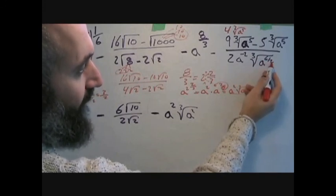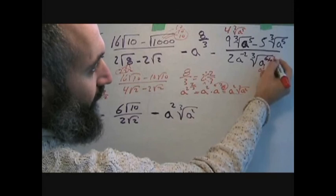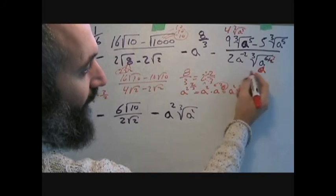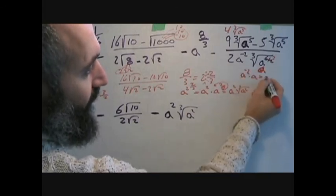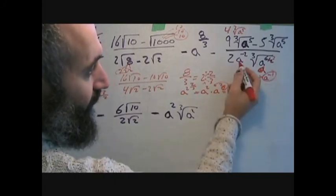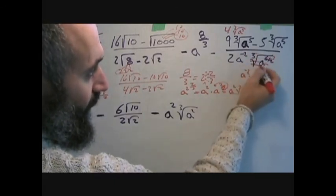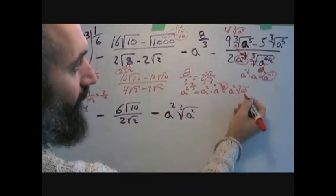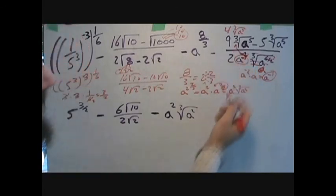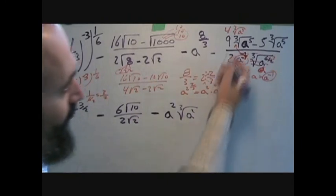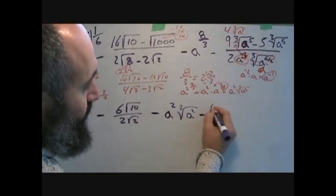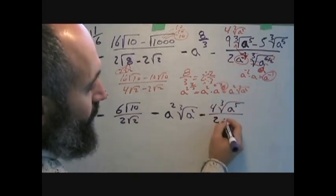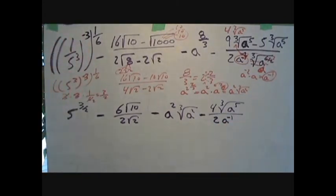Over here, 6 divided by 2 is 3, so this becomes a cubed, and the cube root of a cubed is just a. Then a to the negative 2 times a to the 3 is a to the negative 1, and a negative power in the denominator kicks up. So this becomes minus 4 times the cube root of a to the fifth over a to the negative 1.